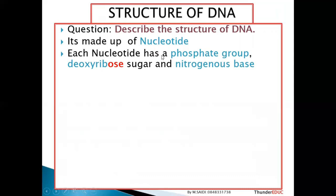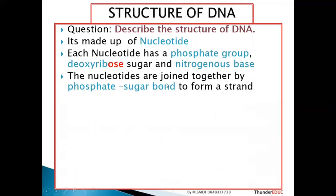Each nucleotide is made up of a phosphate group, a deoxyribose sugar — because this is DNA; if it were RNA you'd say ribose sugar — so be specific: not just pentose sugar, but deoxyribose sugar. And it's made up of nitrogenous bases. The nucleotides are joined together by a sugar-phosphate bond to form a strand.